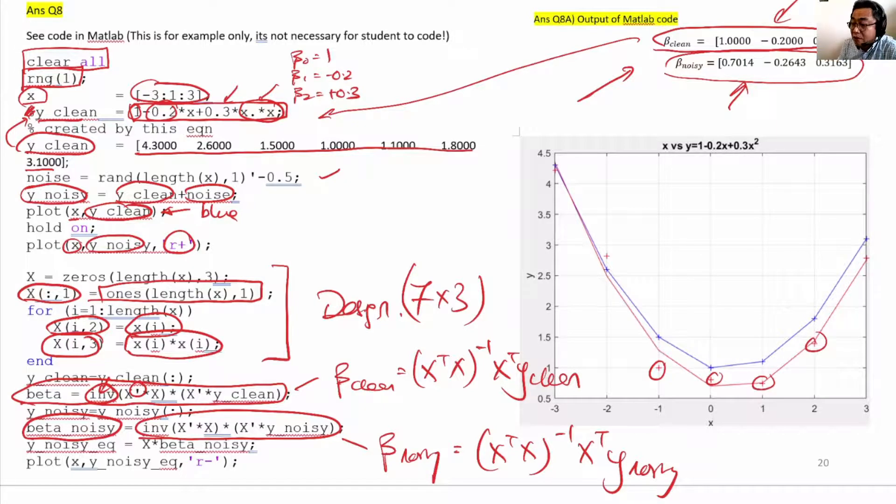This is because it's trying the best it can do and balancing between different errors. So this is the curve it found for β₀, β₁, β₂ for the noisy case.